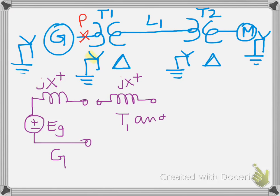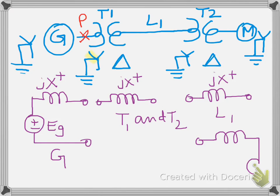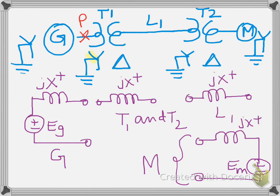The line L1 is also similar to the transformer — just a series reactance J·X_positive. All X_positive values are the corresponding reactances: for the generator it's 0.2 per unit; for transformers T1 and T2, it's 0.1 per unit each. The motor is similar to the generator, with source EM in series with J·X_positive for the motor. Now we are clear about all individual components.